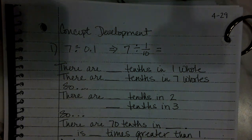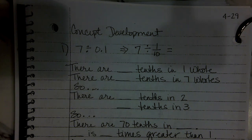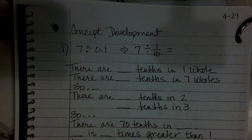Welcome to Engage New York, Module 4, Lesson 29. This is the concept development for this lesson. Let's go ahead and begin. Remember, our objective in this lesson is to connect division by a unit fraction to division by one-tenth and one-one-hundredth.